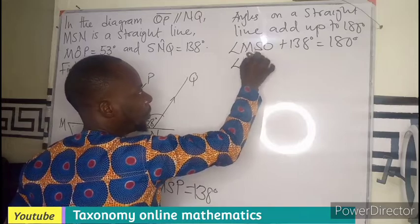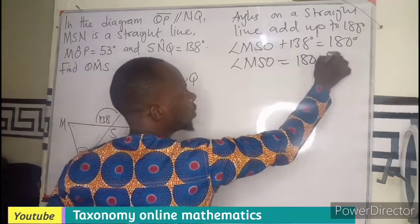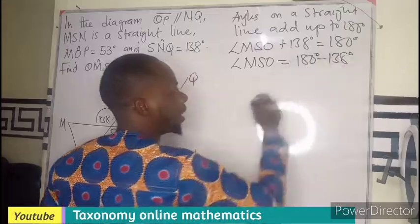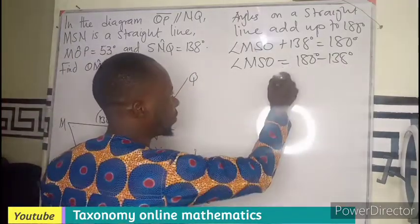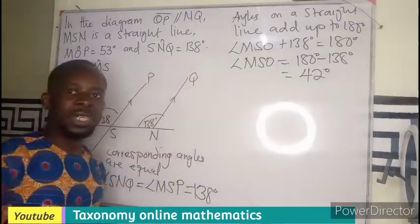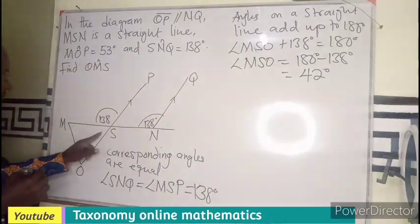So we have 42 degrees. So this very angle is also known as 42.